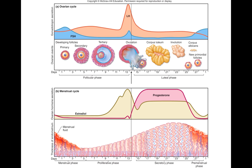If there's no fertilized egg, the corpus luteum degenerates through involution — reduced growth — and disintegrates into the corpus albicans. At this point, the corpus albicans is not producing any hormones and it's about done.